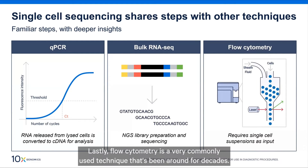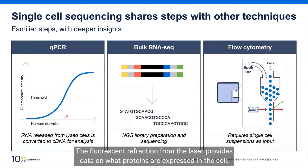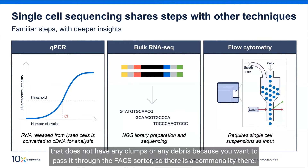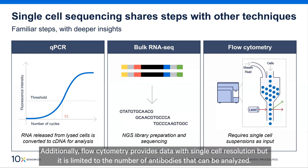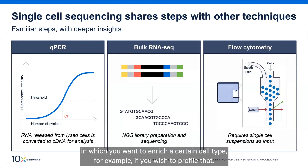Finally, flow cytometry is a very commonly used technique that has been around for decades. Cells are labeled with fluorescent antibodies and passed through a sorter in single file past a laser, and the fluorescent signal provides data on what proteins are expressed. Similar to single-cell sequencing, you need a clean single-cell suspension without clumps or debris. Flow cytometry provides single-cell resolution but is limited in the number of antibodies analyzed. It is also commonly used within the single-cell workflow to enrich for a specific cell type.